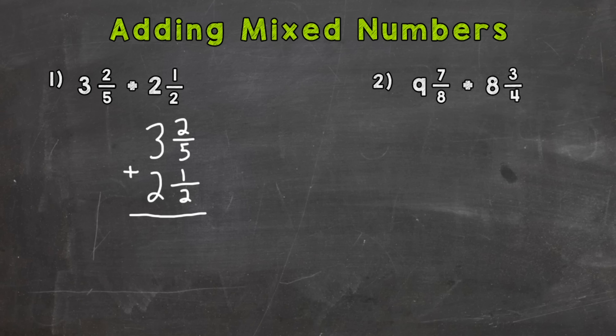Now, just like when we add fractions without whole numbers, we need a common denominator. We have a five and a two, so we don't have the same denominator for the fractional parts of these mixed numbers, and we're going to need to rename each of them with a common denominator.